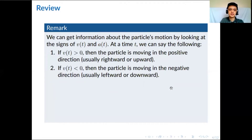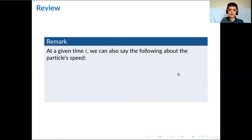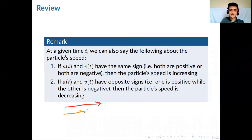Given v(t) and a(t), we can say something depending on their signs. The sign of v(t) tells us whether the particle is moving in the positive or negative direction. The acceleration tells us whether the particle's velocity is increasing or decreasing — very important to take note. Regarding speed: when v(t) and a(t) have the same sign, the particle's speed is increasing — it's speeding up. When they have opposite signs, the particle is slowing down. Think of it this way: if the velocity and acceleration point in the same direction, the particle speeds up; if acceleration opposes the velocity, the particle slows down.